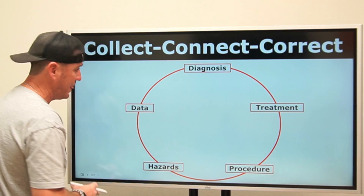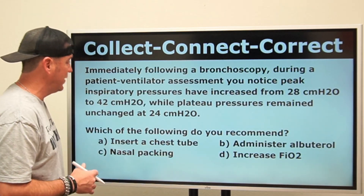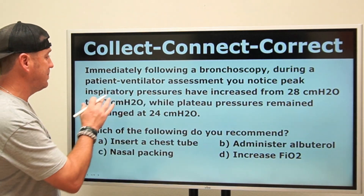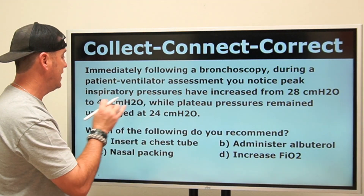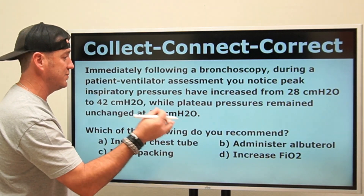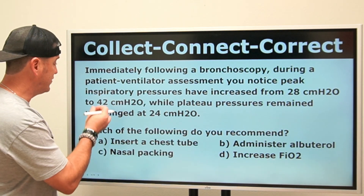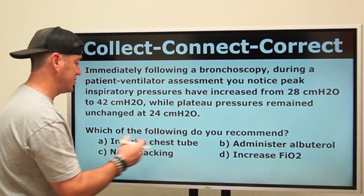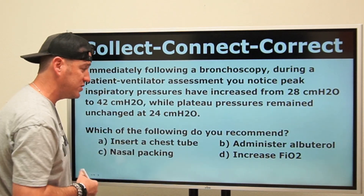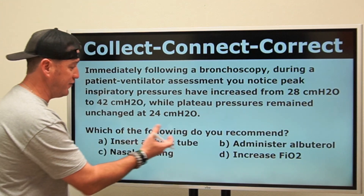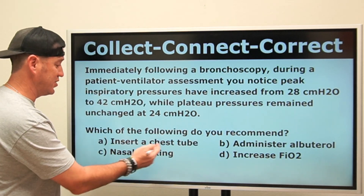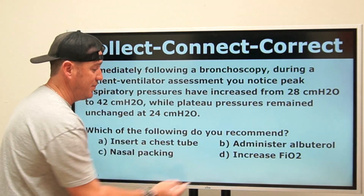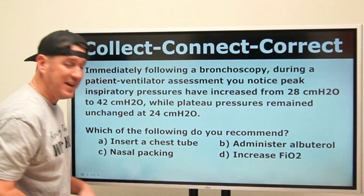Let's take a look at a practice question. Immediately following a bronchoscopy during a patient ventilator assessment, you notice peak inspiratory pressures have increased from 28 centimeters of water pressure to 42 centimeters of water pressure, while plateau pressures have remained unchanged at 24 centimeters of water pressure. Which of the following do you recommend? Insert a chest tube, nasal packing, administer albuterol, or increase the FIO2?